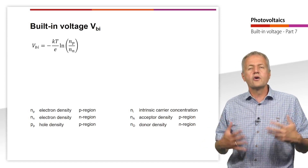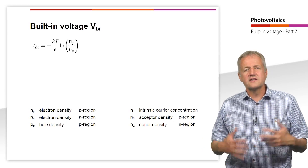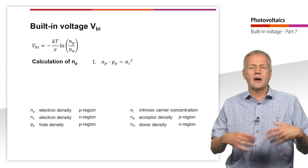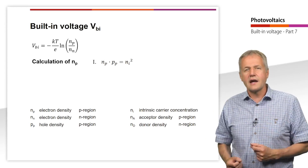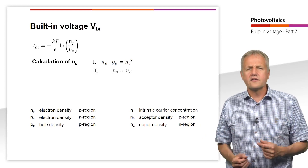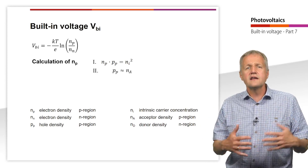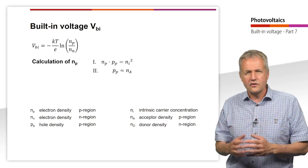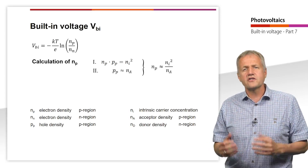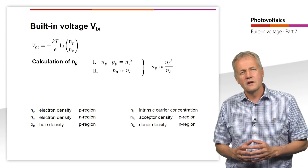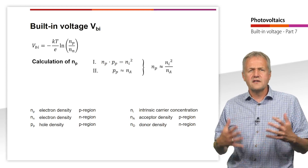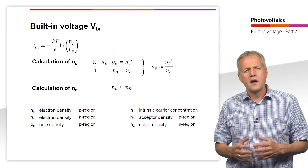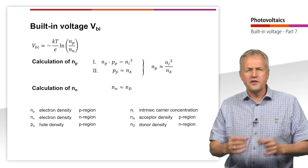Since we do not know the electron concentration in the p region, we have to work with known quantities like the dopant concentration. In the teaching unit about doping, we use the following equation: electron concentration times hole concentration equals intrinsic carrier concentration squared. We assume that the hole concentration in the p region is equal to the acceptor concentration, which allows us to calculate the electron concentration by dividing the intrinsic carrier concentration squared by the acceptor concentration. For the electron concentration in the n region, we make the assumption that it is equal to the donor concentration. Now we insert both into the equation for the built-in voltage.